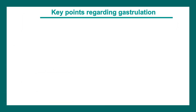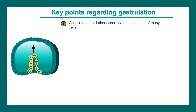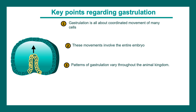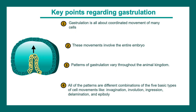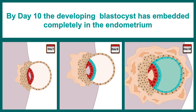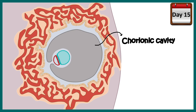Gastrulation is all about coordinated movements of a pool of cells, and this movement involves the entire embryo. Patterns of gastrulation can vary throughout the animal kingdom. We'll take the example of the human embryo to understand this better. This is about the end of the second week of human gestation. At this point, the blastocyst is implanted into the uterine wall. At around day 15, you can see a distinct chorionic cavity, a primitive stalk, and the embryo hanging through the primitive stalk.